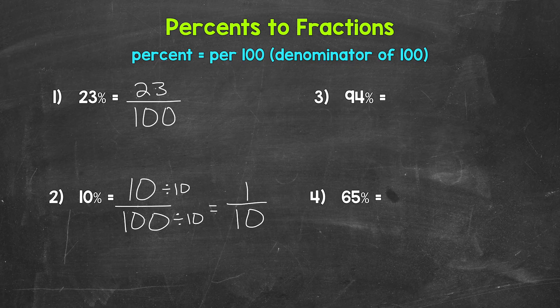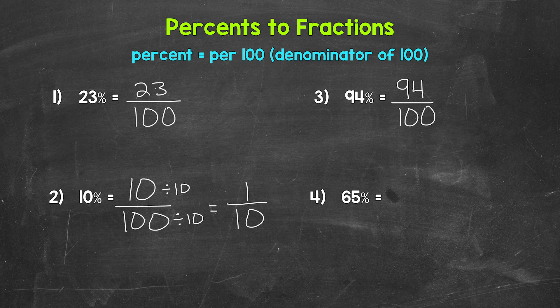Let's move on to number three, where we have 94%. So let's write this as a fraction here. We have 94 over 100, 94 hundredths. And this is correct, but we can simplify here.